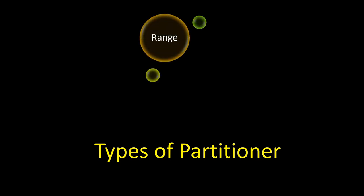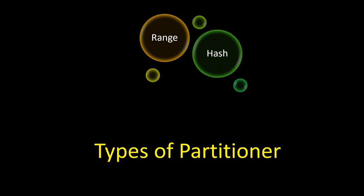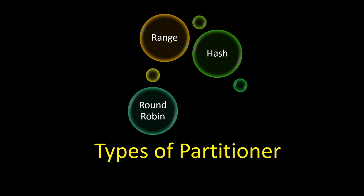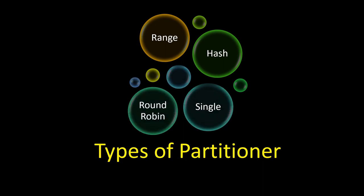In Apache Spark, there are 4 partitions. But the two main ones we will focus on are Range and Hash. We will also talk about round-robin and single partitions.